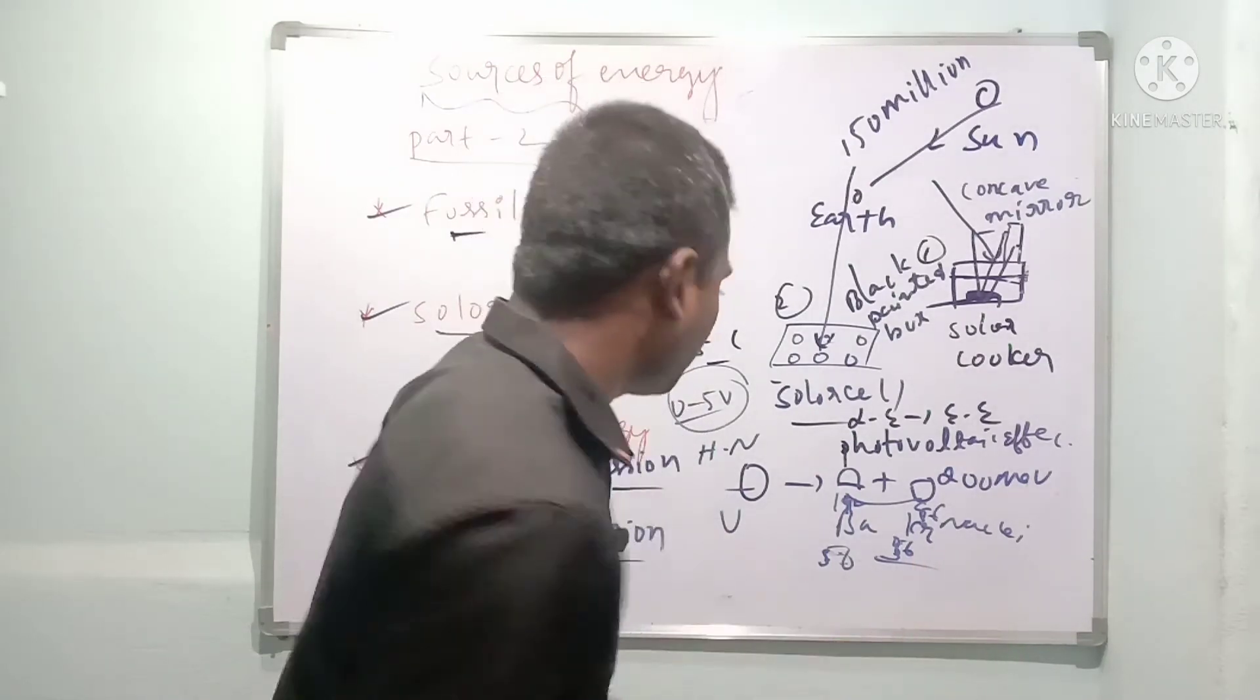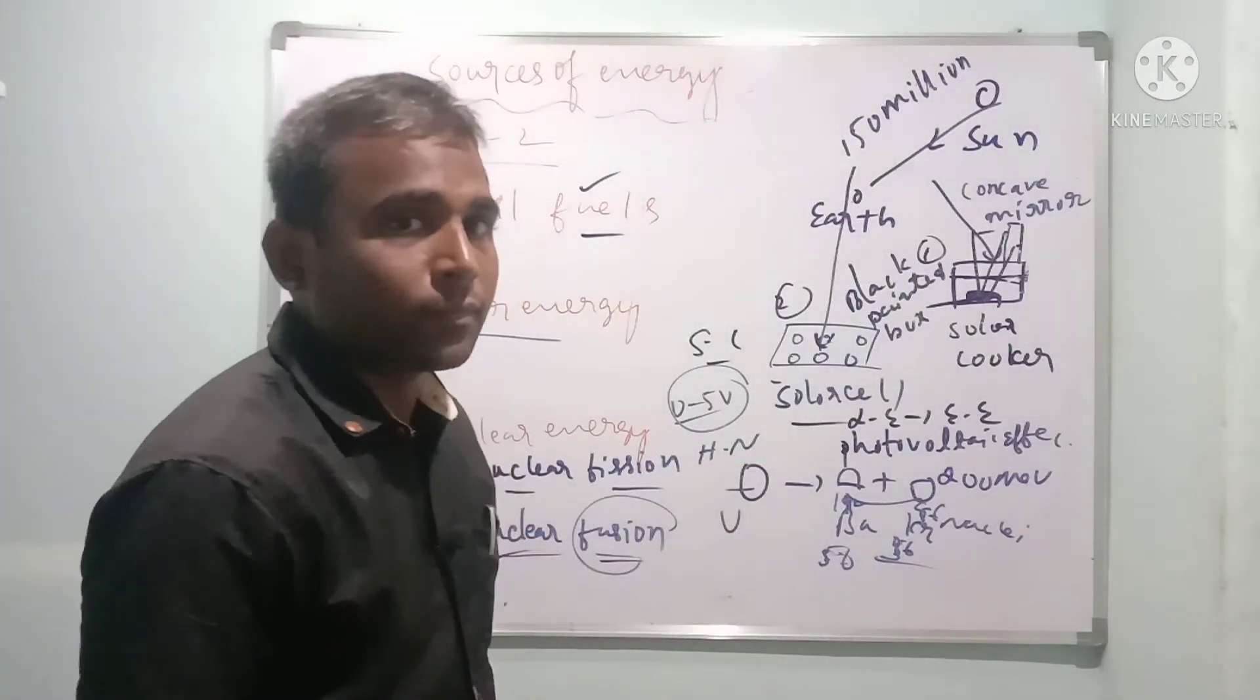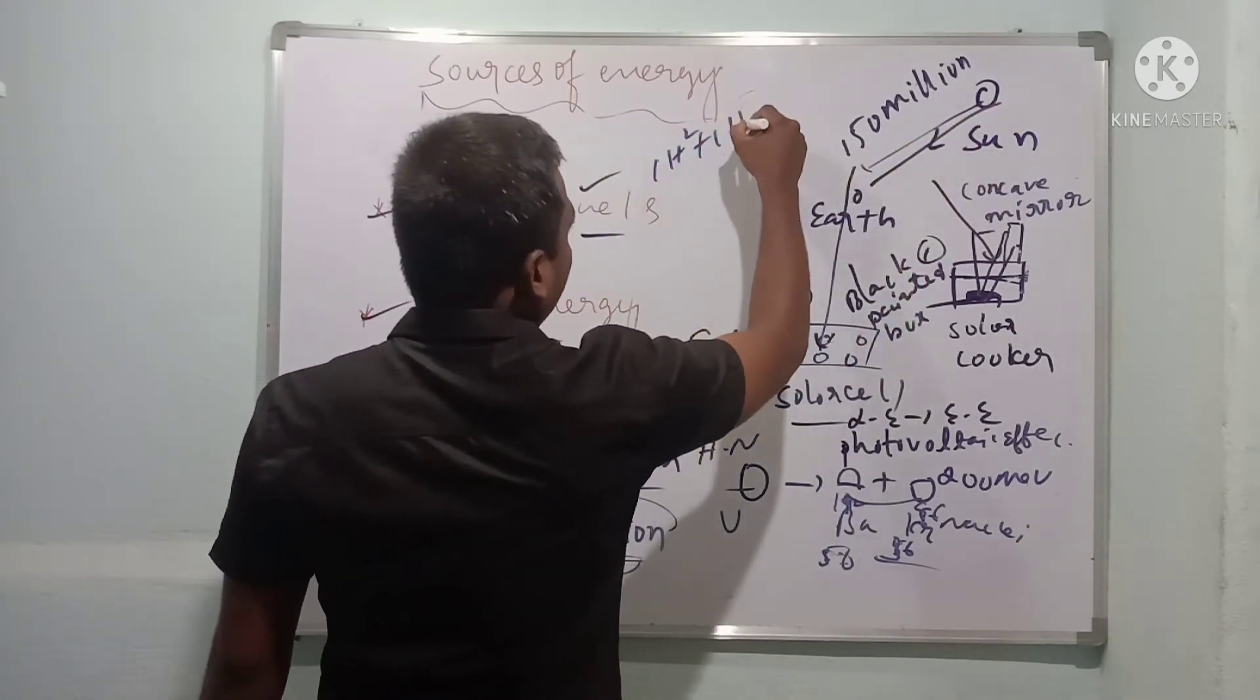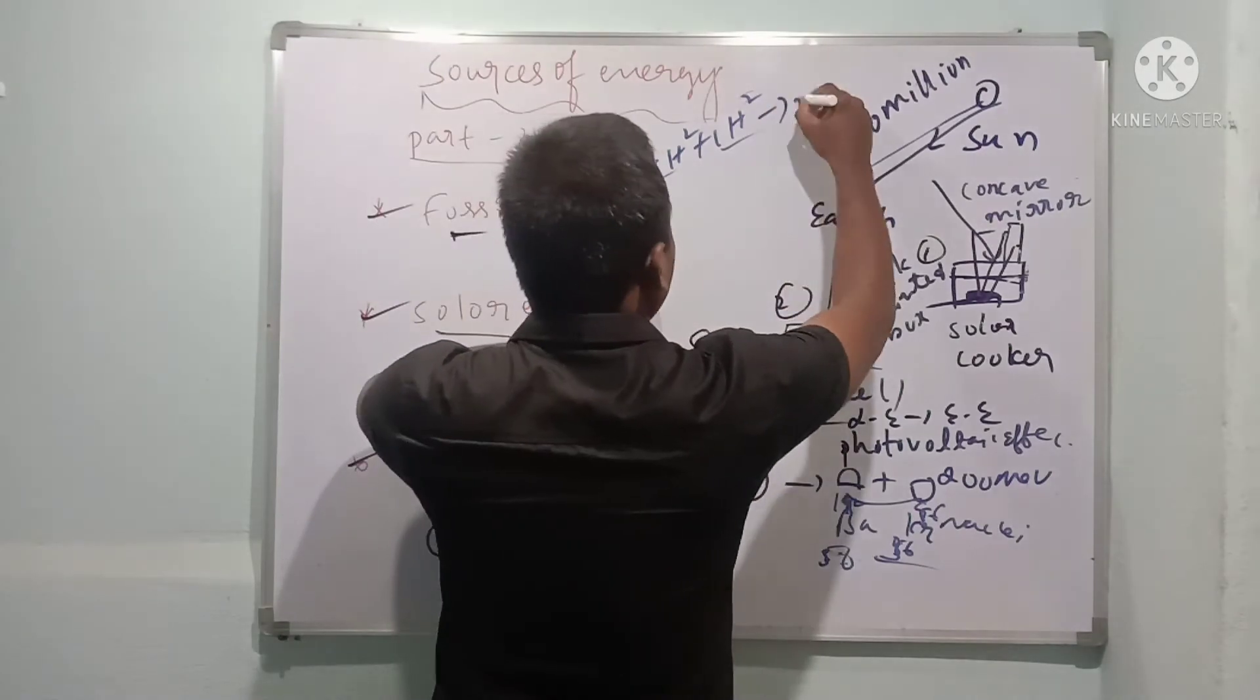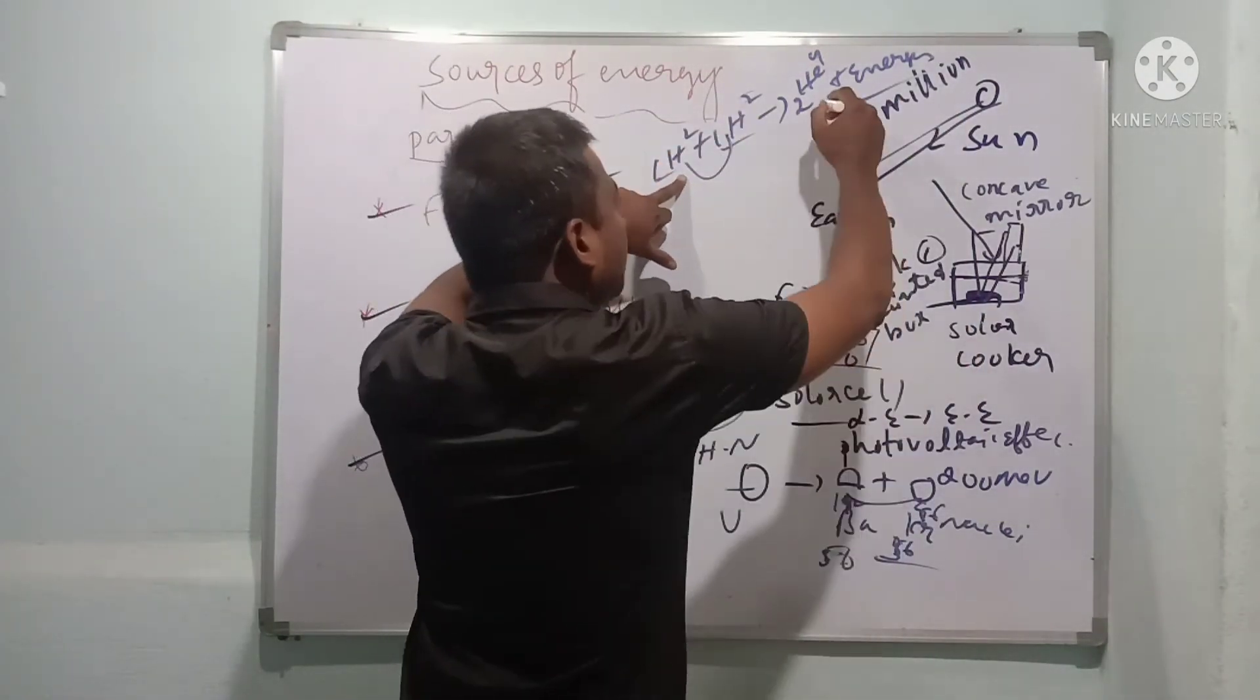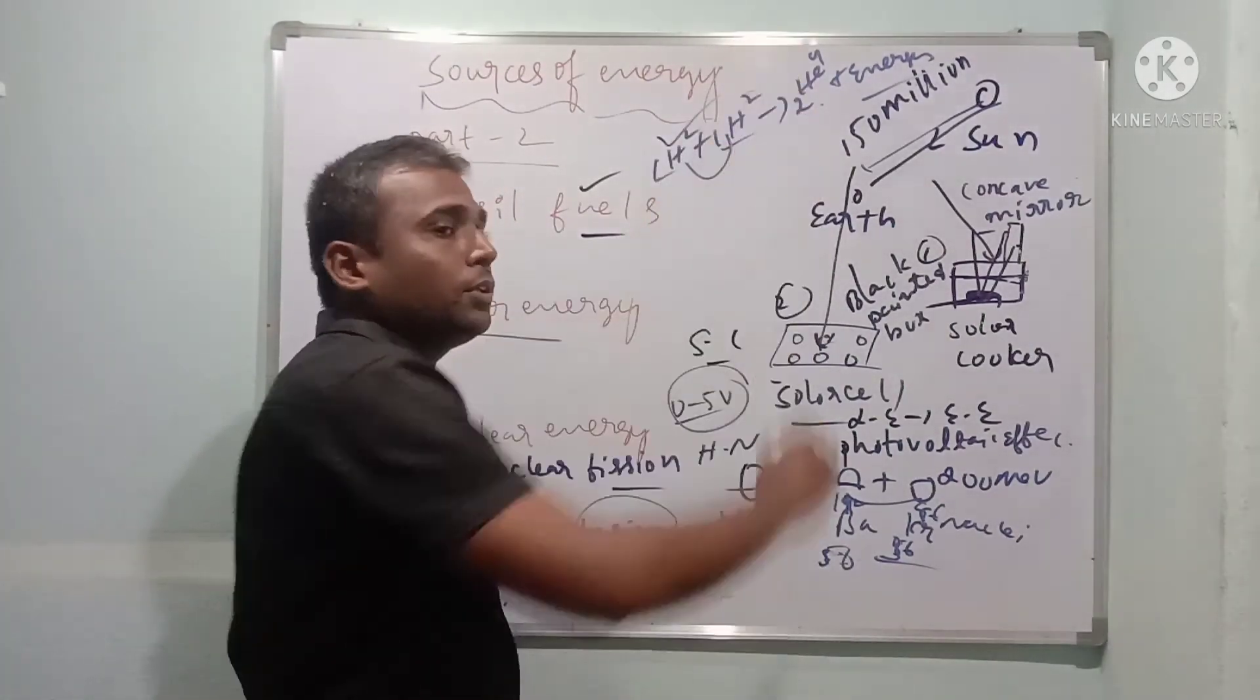Nuclear fusion means combining. Here, hydrogen nucleus, which is called deuterium - an isotope of hydrogen - converts into heavy nucleus with liberation of large amount of energy. The process of combining two nuclei to form a heavy nucleus produces a large amount of energy. This is nuclear fusion process and is the principle of hydrogen bomb.